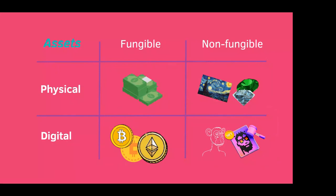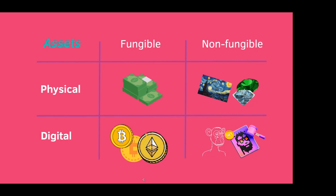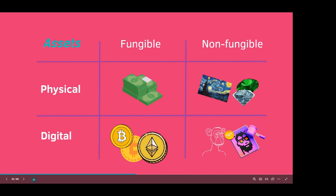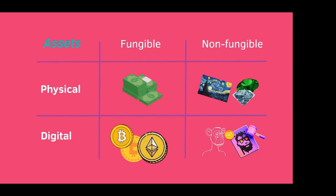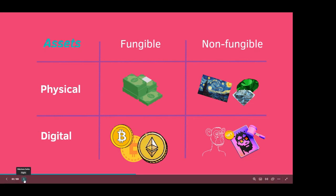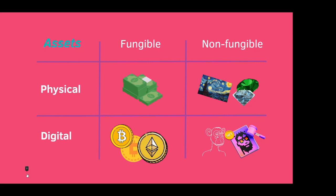Non-fungible means that one is not equal to one — we're talking about precious stones or paintings like the Mona Lisa. One painting is one painting, you cannot copy it or make two of it. That's the non-fungible physical asset. Then we have digital fungible assets which are cryptocurrencies such as Bitcoin and Ethereum — one Ethereum is equal to one Ethereum but they're digital, not physical. And NFTs are non-fungible tokens: digital and non-fungible, one-of-a-kind digital assets stored on the blockchain.